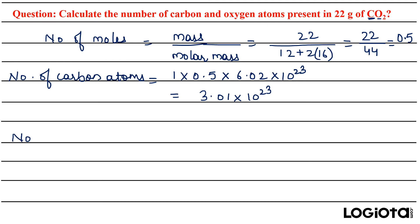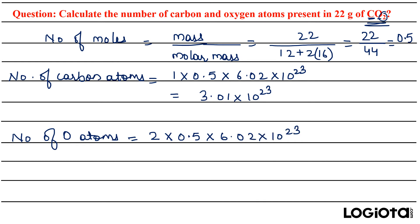Now let's see the number of oxygen atoms. In the formula you can see that the subscript is 2 with the oxygen, meaning there are 2 atoms of oxygen. So X will be 2 here: 2 × 0.5 moles × 6.02 × 10²³, which gives an answer of 6.02 × 10²³. These are the atoms of carbon and oxygen present in 22 grams of CO₂.